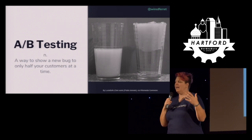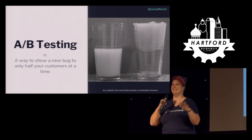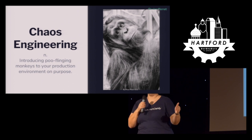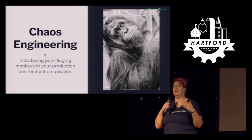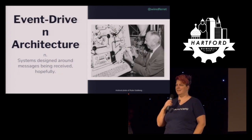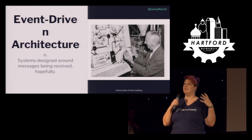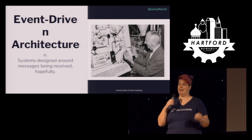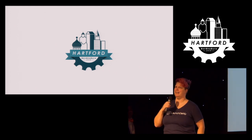A-B testing is a way to show a new bug to only half your customers at a time, so you can get comparative analysis on how they feel about the new bug versus the old bug. Chaos engineering is the practice of introducing poo-flinging monkeys into your production environment on purpose because your life was not exciting enough. Event-driven architecture is when you've designed a system around messages being sent and received. Probably. Nothing could go wrong with this plan. I hope these kind definitions have helped you understand what it is that you're doing in the DevOps world.